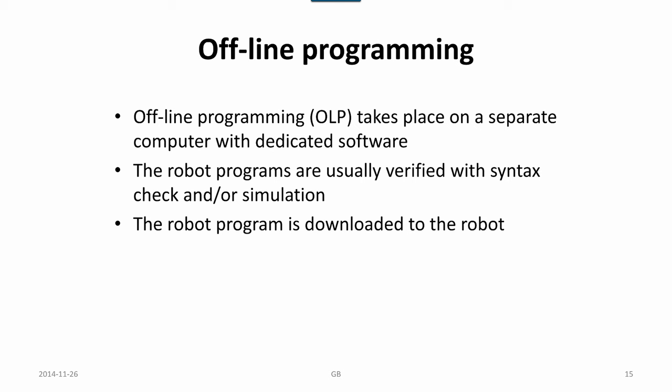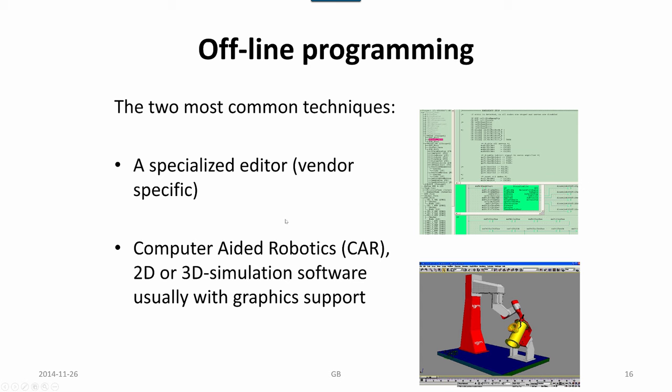Offline programming takes place on a separate computer with dedicated system software. The robot programs are usually verified with syntax check and or simulation. The robot program is normally downloaded to the robot. In some cases there could be a direct connection, so they are checked side by side, simultaneously. There is some kind of specialized editor which is vendor-specific with syntax checking, and also a graphical system, a graphical view which shows the system as it would run using the program written in the specialized editor at the same point.